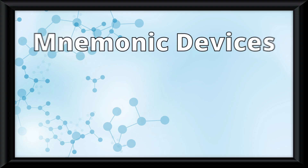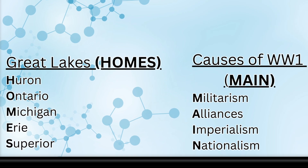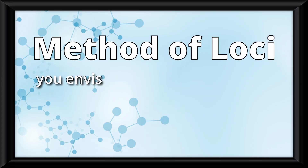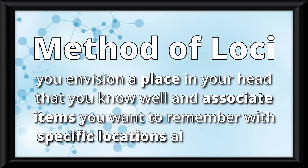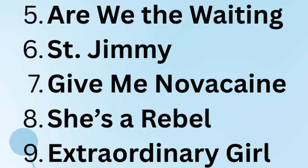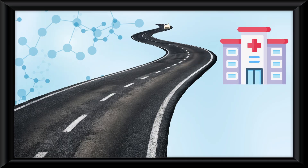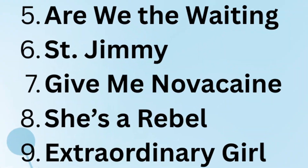First, let's talk about mnemonic devices. A good example you probably don't know is the method of loci. This is where you envision a place in your head that you know well, and associate items you want to remember with specific locations along the way. For example, if I wanted to remember the song Give Me Novocaine in American Idiot, I can envision my long drive to a summer camp I used to work at, and a hospital I always used to pass. I can associate Novocaine with that hospital, therefore helping me to remember the song name.